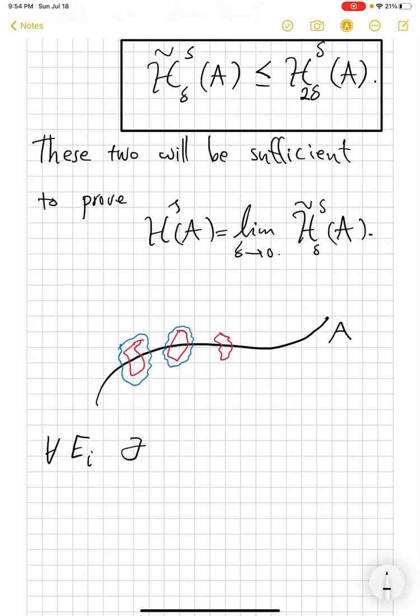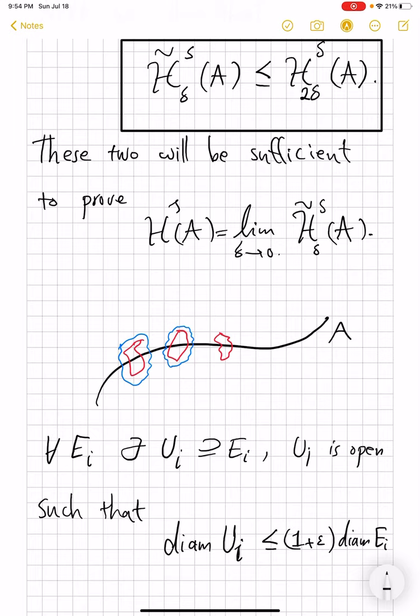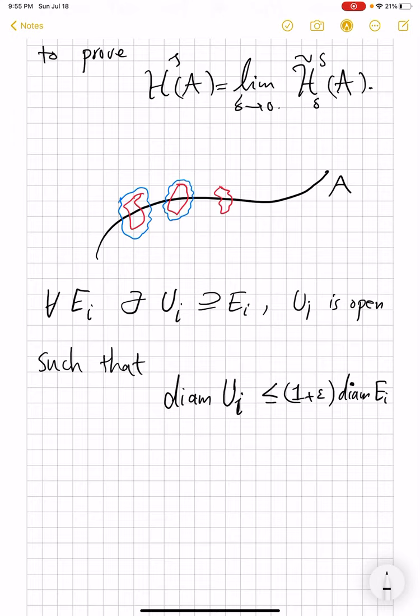So for every E_i, there exists some U_i which contains E_i, and then U_i is open, such that diameter of U_i is, say, less than or equal to 1 plus epsilon times diameter of the E_i itself. So I don't want to make it additive increase, but multiplicative increase. Now the technical part, the reason actually I decided not to write down the proof is with the case of having E_i have diameter 0. That's an annoying technicality which can be done by separating the summation, and it gets out of hand.